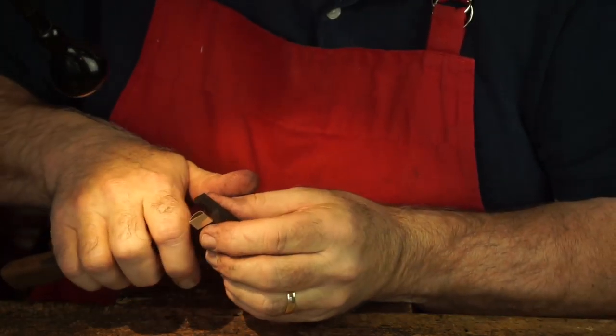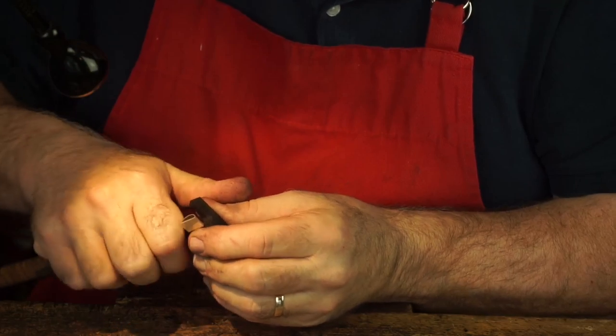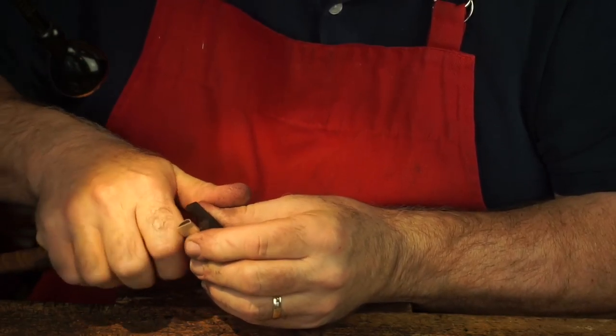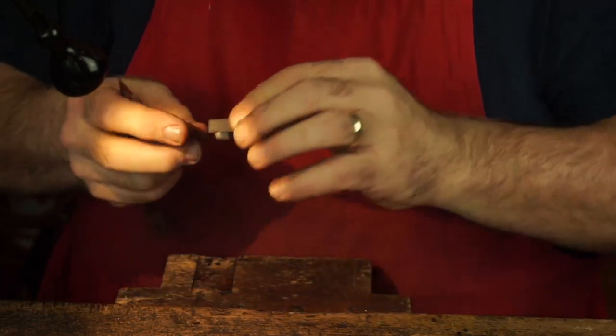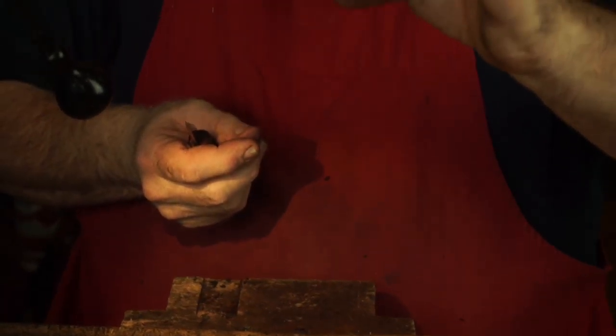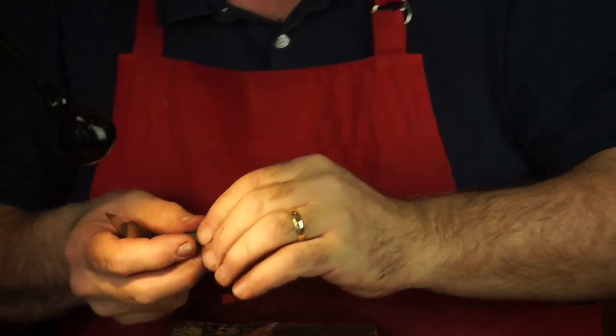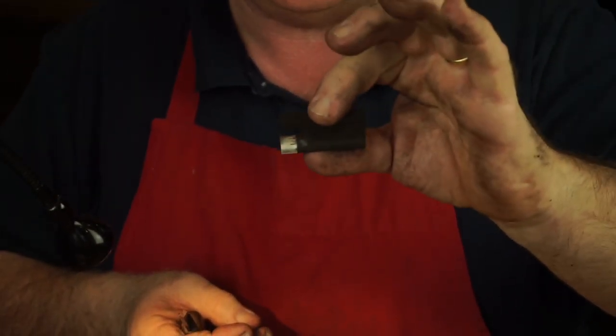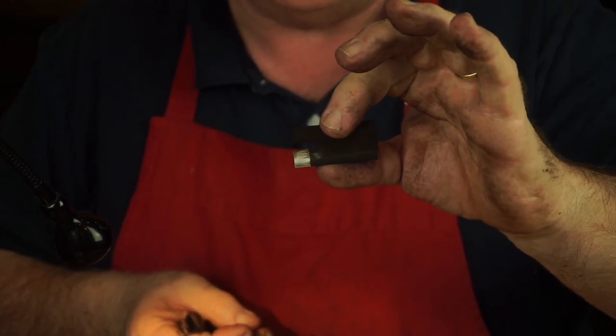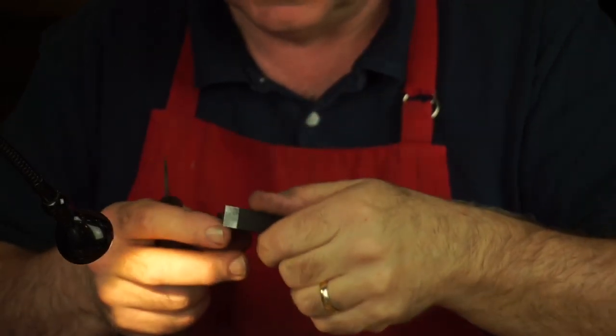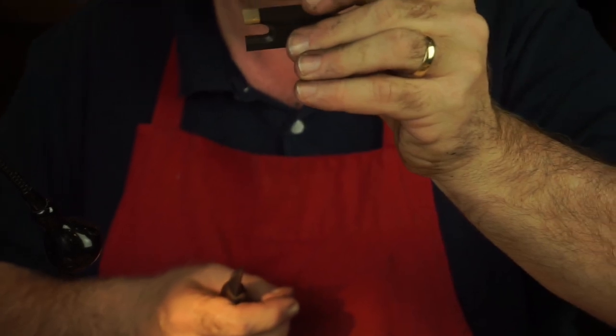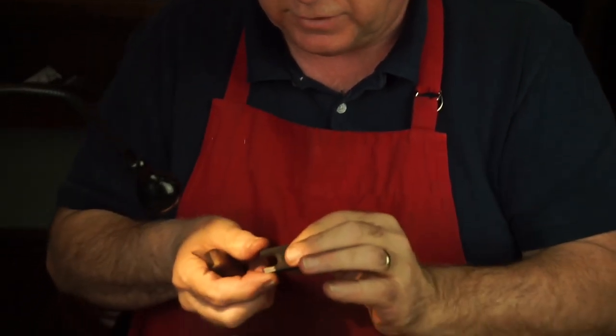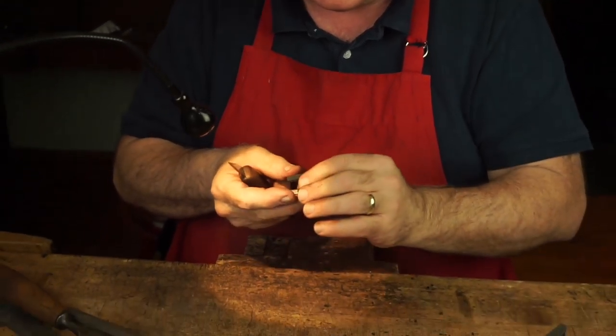Tyler said he saw a Hoyer recently where he had stamped the underslide and thought that was a nice touch. Okay, I think that's good enough for now. So we've got the basic shape of the throat. I don't really quite finish it up until after I've got the frog fit and the eyes in.